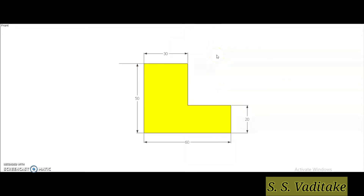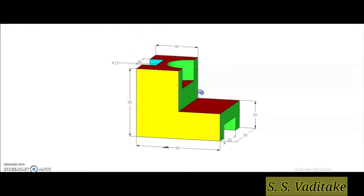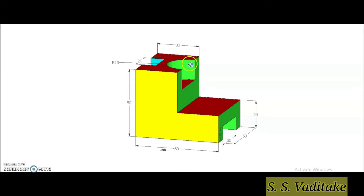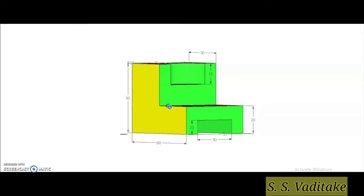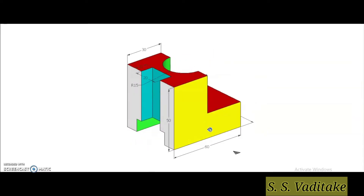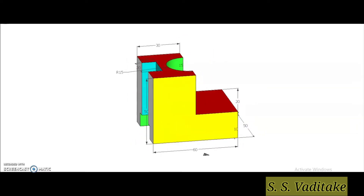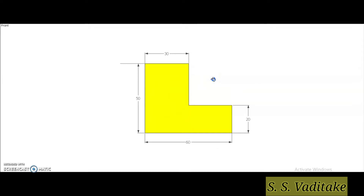Looking in the direction of arrow, we have to draw its front view. Try to build up judgment about the visible and hidden surfaces which will be observed while we are considering the direction of arrow to draw its front view. The visible and hidden surfaces are shown here — the three hidden surfaces will be observed.